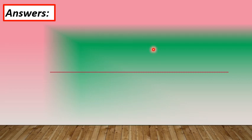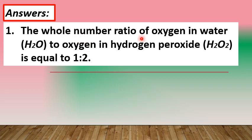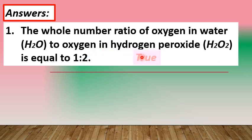For statement number 1: The whole number ratio of oxygen in water to oxygen in hydrogen peroxide is equal to 1 to 2. This statement is true. The law of multiple proportions applies here because water and hydrogen peroxide are made up of the same two elements — hydrogen and oxygen. Taking the ratio of oxygen in water to oxygen in hydrogen peroxide gives 1 to 2.